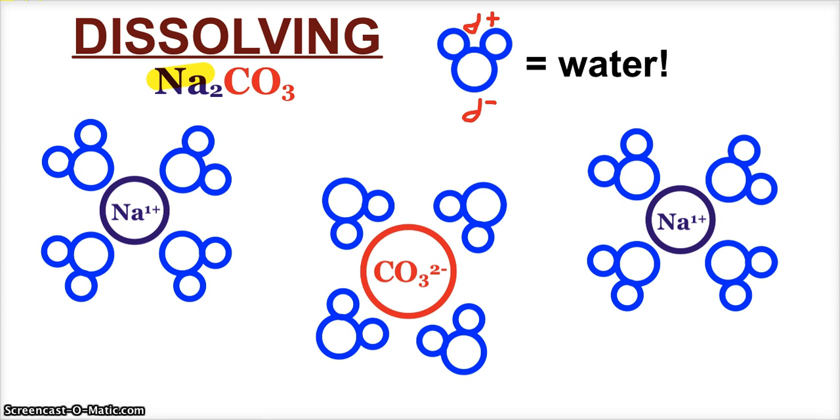If the ions are too big, then the water molecules can't really do a good job surrounding them and pulling them apart. Which is why your solubility rules say most carbonates and most phosphates are insoluble. Alright. Sodium carbonate and potassium carbonate are because the sodium and potassium are so teeny tiny, water can still do its job.